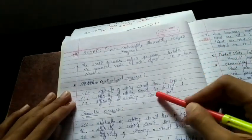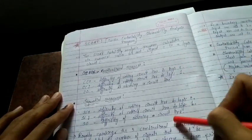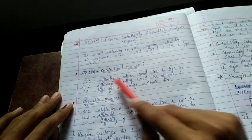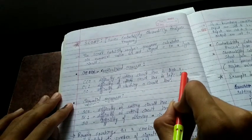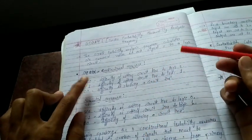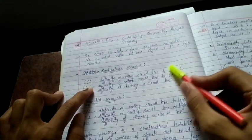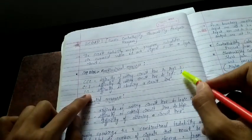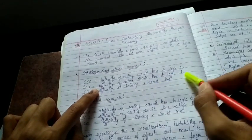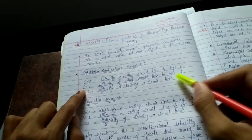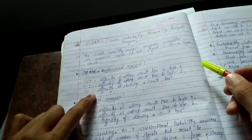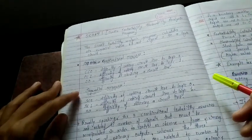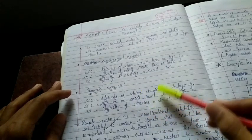The six SCOAP measures consist of three combinational and three sequential values. CC0 is the difficulty of setting a circuit line to logic zero, CC1 is the difficulty of setting it to logic one, and CO is the difficulty of observing a circuit line. The same definitions apply for the sequential measures SC0, SC1, and SO.